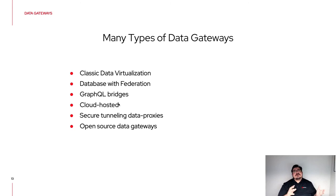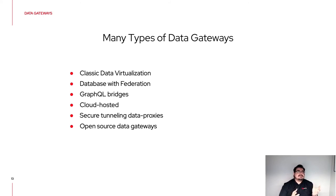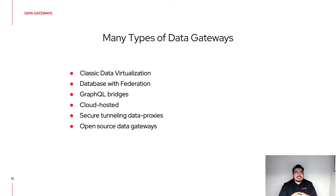Now let's go over some examples of what data gateways look like, because there is not just one single solution — there are different shades of data gateways. For example, the classic data virtualization layer includes solutions like Composite or Denodo, which still have a centralized single-deployment approach similar to what we used to have with ESBs. There is also federation within the database — databases like Postgres that can implement foreign data wrappers, allowing access to database details through standardized connectors.